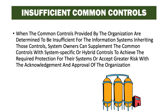For example, an organization may provide annual security training as a common control. A system owner can inherit that training, eliminating the requirement to create, implement, assess, and maintain documentation for it. However, there may be one portion of training the system owner wants to conduct on their own — perhaps specific security requirements for documenting how software code is written. The system owner can take that one piece of the control, implement it locally, have it assessed and documented locally, therefore reinforcing the insufficient common control. The remainder is provided by the common control provider, giving the needed protection for that system.